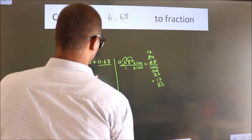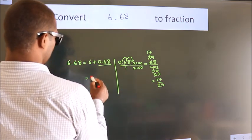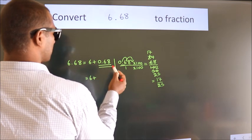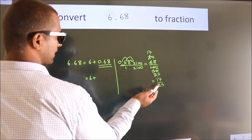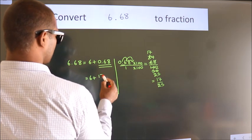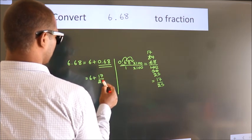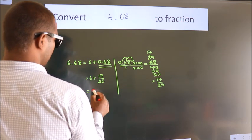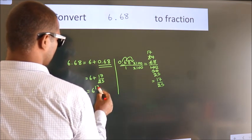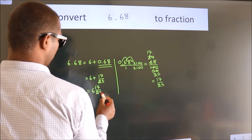Now, here. 6 plus in place of 0.68. Now, we write this fraction. 17 by 25. 6 plus 17 by 25. In mixed fraction, it is 6 17 over 25.